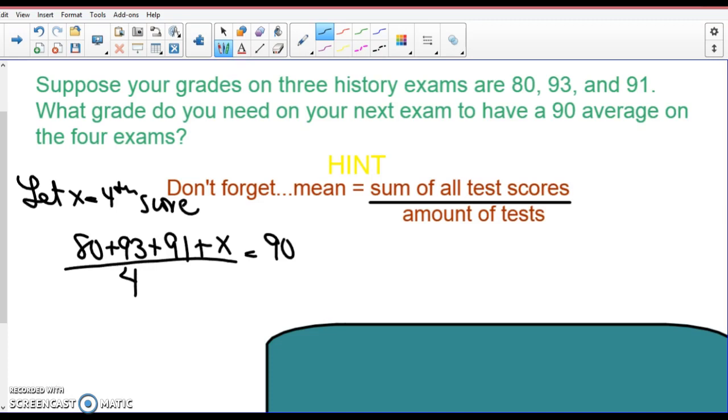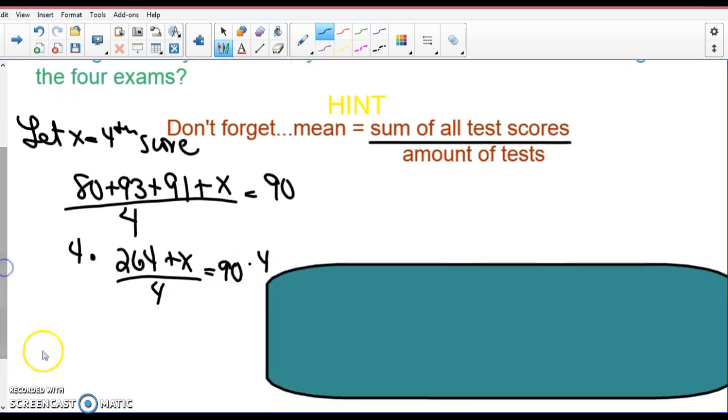And I need that to equal 90. So that makes sense. Here's our four scores, we don't know the fourth. But once we know that, we divide that by four and we want it to equal 90. Alright, so let's solve it. 80 plus 93 plus 91 is 264 plus X divided by four equals 90. Now, back to sixth grade. At the end of the year, you guys solve the equation. What does this mean, dividing by four?